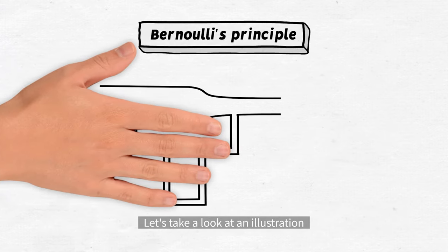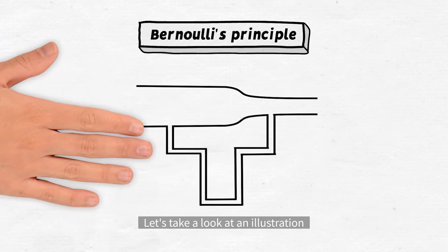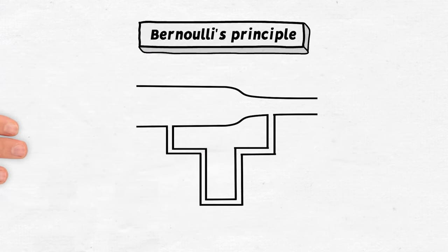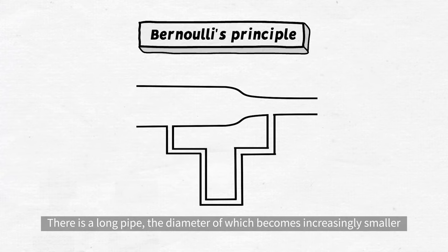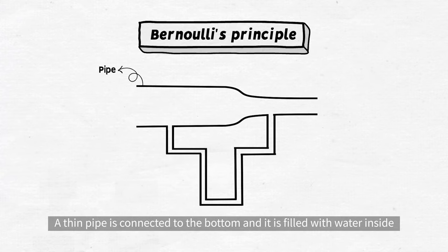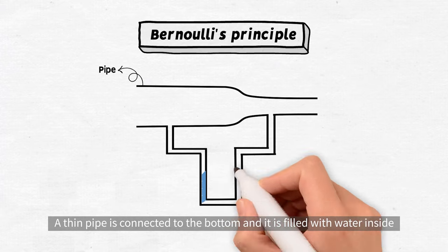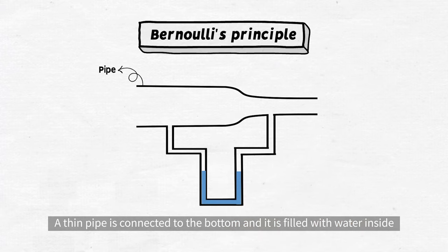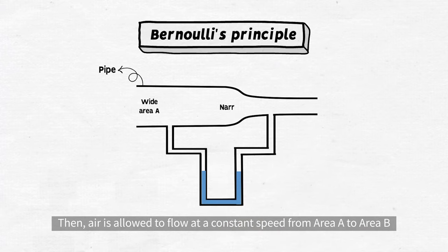Let's take a look at an illustration. There is a long pipe, the diameter of which becomes increasingly smaller. A thin pipe is connected to the bottom and it is filled with water inside. Then, air is allowed to flow at a constant speed from area A to area B.